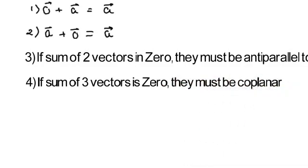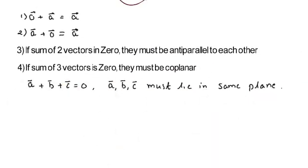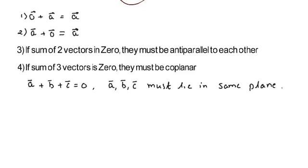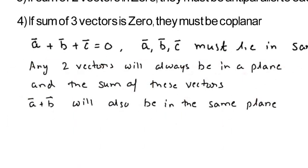That means, if there are three vectors A vector, B vector and C vector such that A vector plus B vector plus C vector is equal to zero, then A vector, B vector and C vector must lie in the same plane. Any two vectors will always be in the same plane.